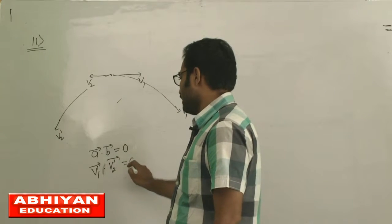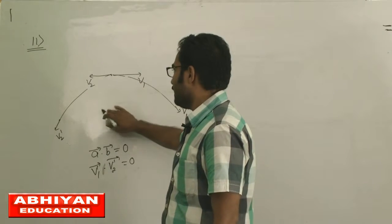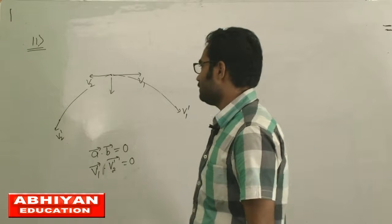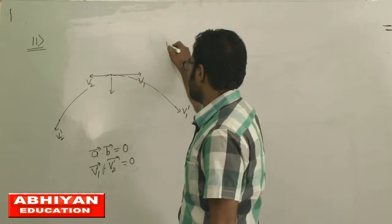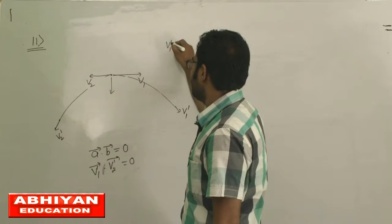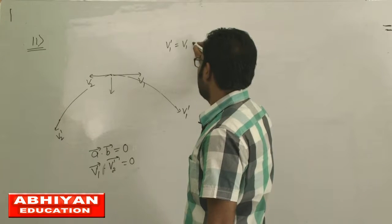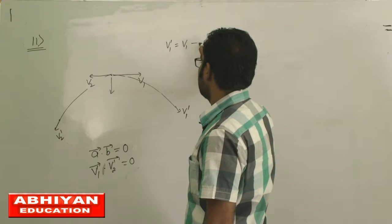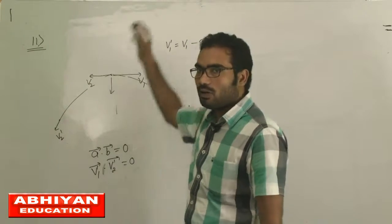So the value is zero. The gravitational force equation gives us: V1 vector equals to V1i minus gtj.